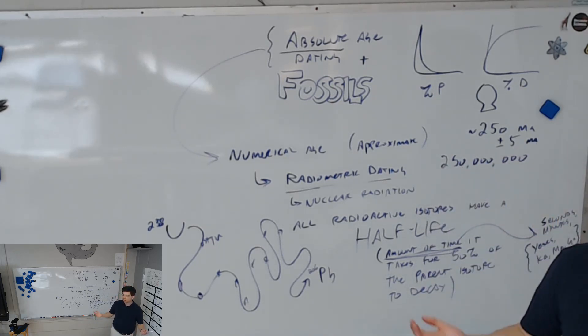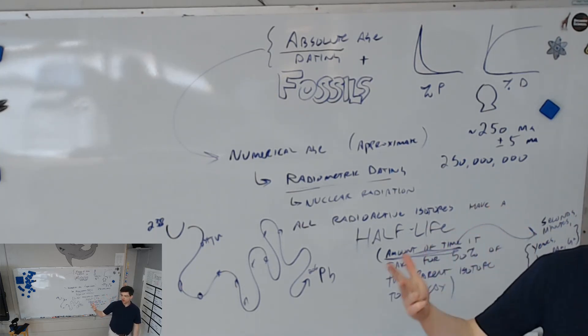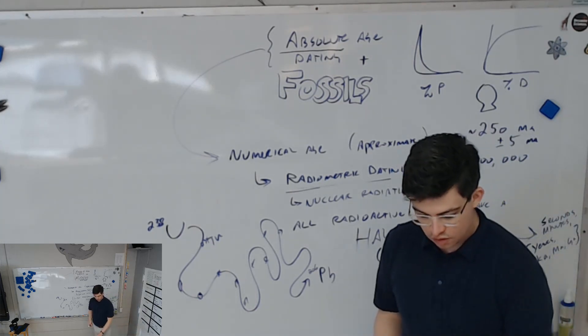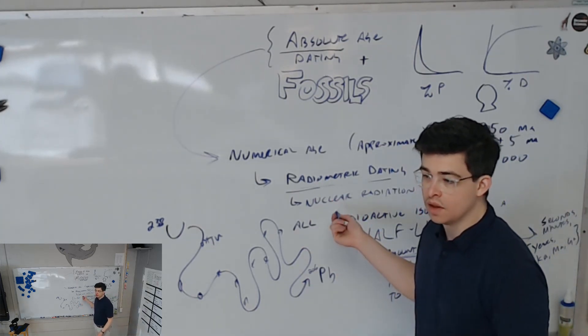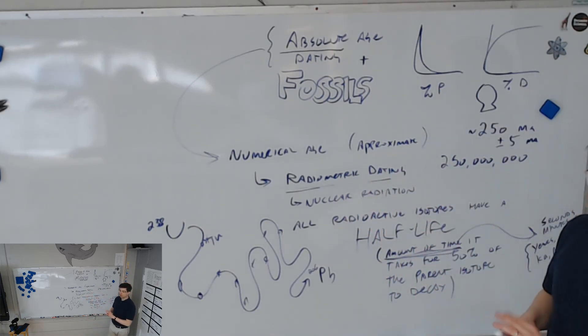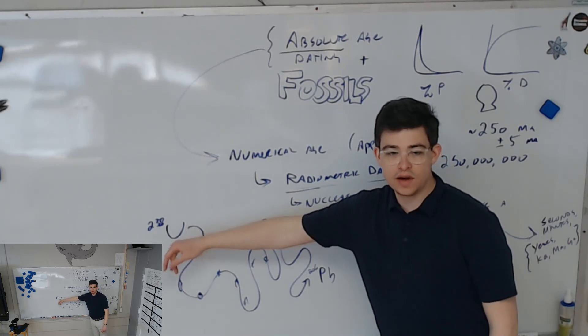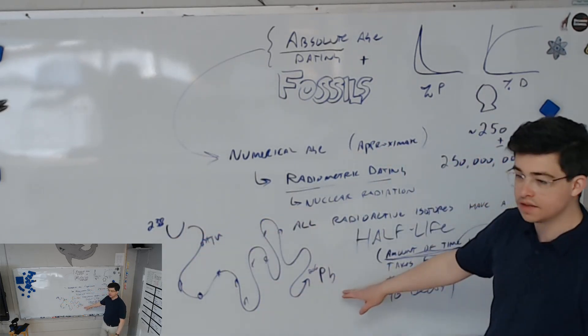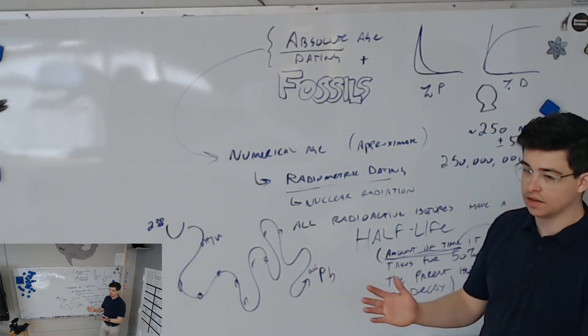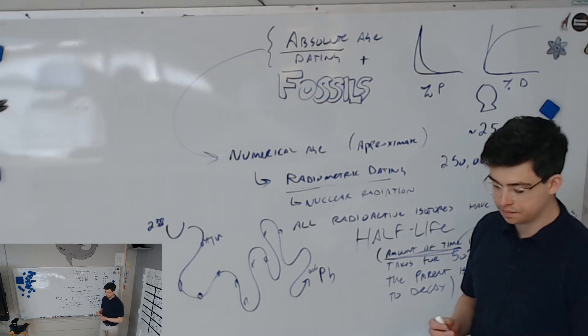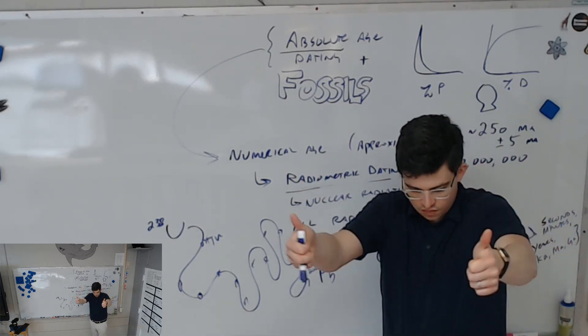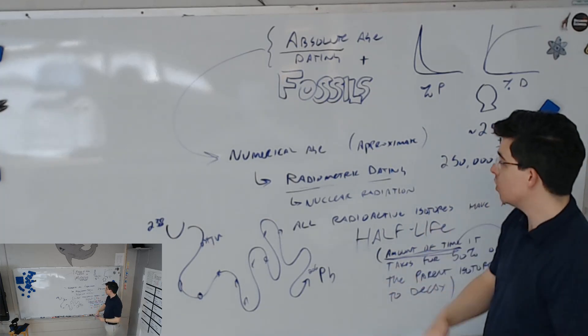You'll need to read a little bit more about that in order to do a good job on your test. And then your book also talks about other ways to do absolute age dating, which is ice cores, tree rings, and varves. Know those definitions which you already showed from your vocab. Do you have questions about radiometric dating?